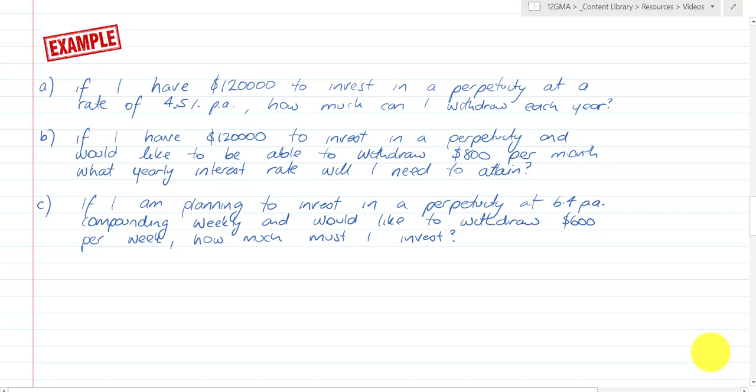This example has three parts, and you can probably guess those three parts use the three formulas I've just provided. Part A: If I have $120,000 to invest in a perpetuity at a rate of 4.5% per annum, how much can I withdraw each year? P is $120,000, I is 4.5% per annum.